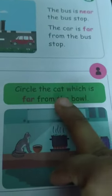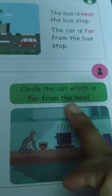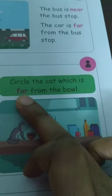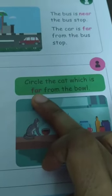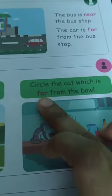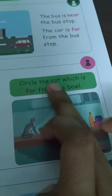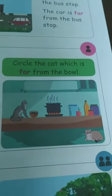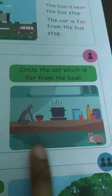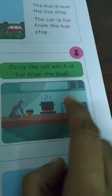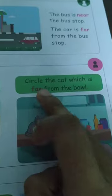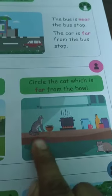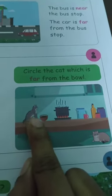Next — circle the cat which is far from the ball. What does 'far' mean? Far means the largest distance — it takes more time to reach that particular place. We want to circle the cat. Look at this picture — how many cats are there? Yes, there are two cats, and here is a ball. We want to circle which cat is far.